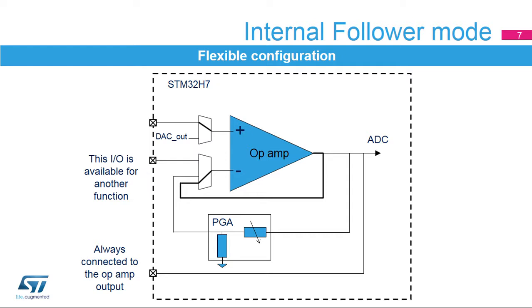In internal voltage follower mode, the GPIO pad assigned to the op-amp's inverting input is free, so that it may be used with a different function as subsequently assigned in the GPIO selection process.